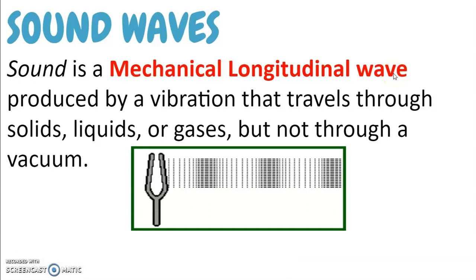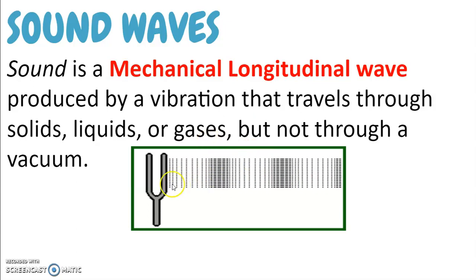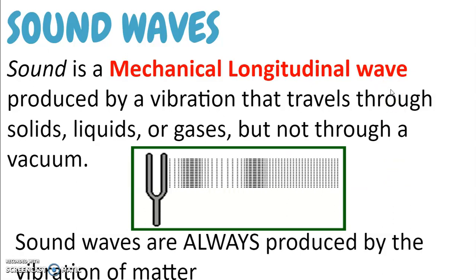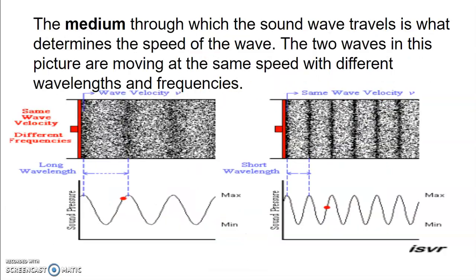Sound is a longitudinal, mechanical wave. Electromagnetic waves like light are the only waves that aren't mechanical. Sound vibrates the air around it — if you strike a tuning fork, you hear it because it sends sound waves through the air. Sound is always produced by the vibration of matter. Looking at the air particles, you have compressed areas called compressions and less dense areas called rarefactions. Sound is also called a pressure wave.